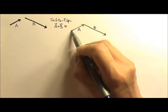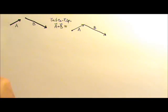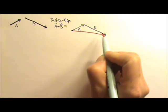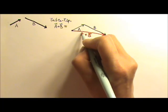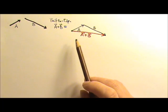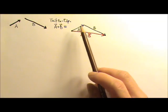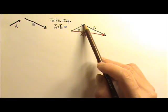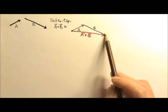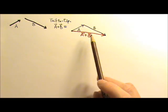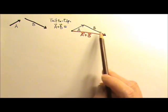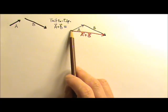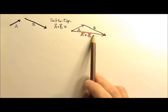We started here and ended there, so the sum of the vectors is from start to finish — that's A plus B. A good example is displacement, which is a vector. A person travels from here to there, and then from there to another point. His total displacement is from his initial position to his final position, and that's the sum of the displacements.